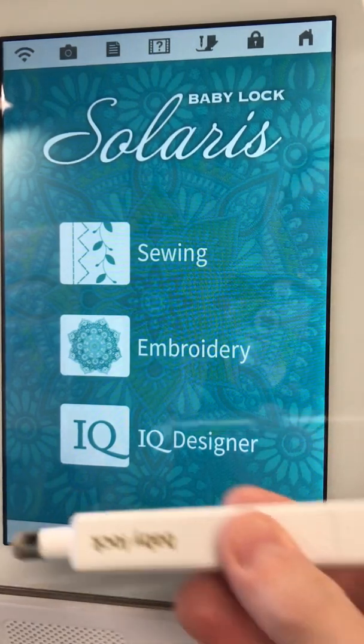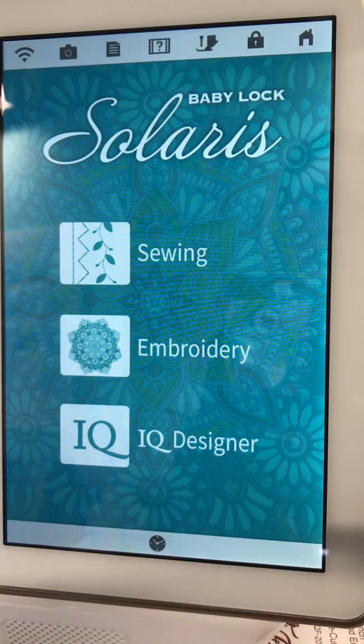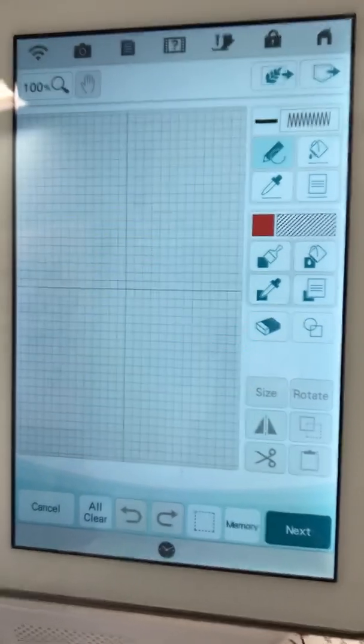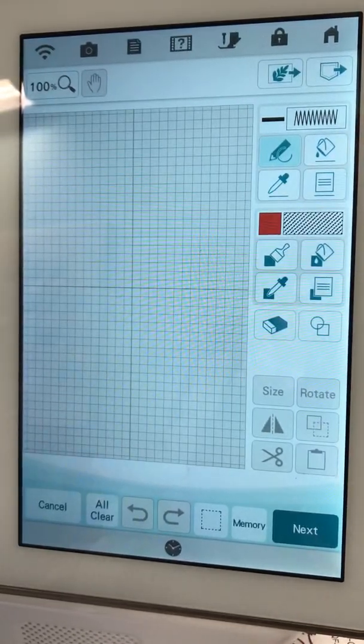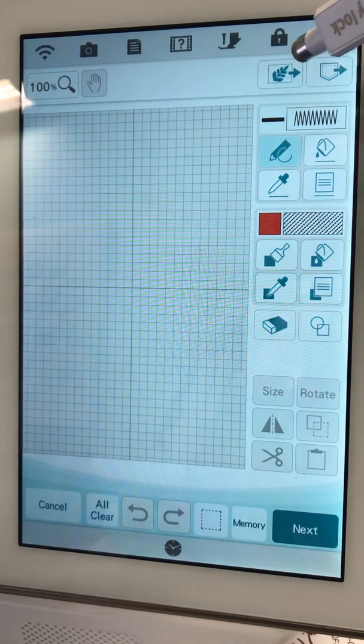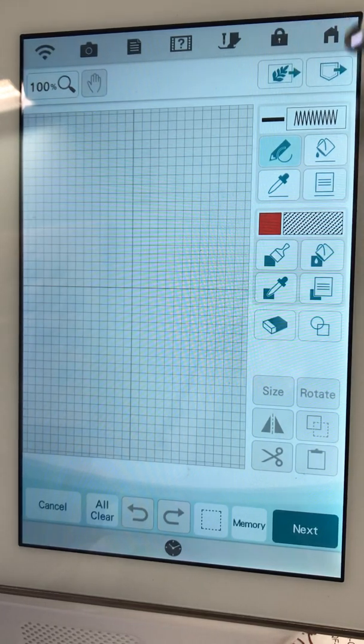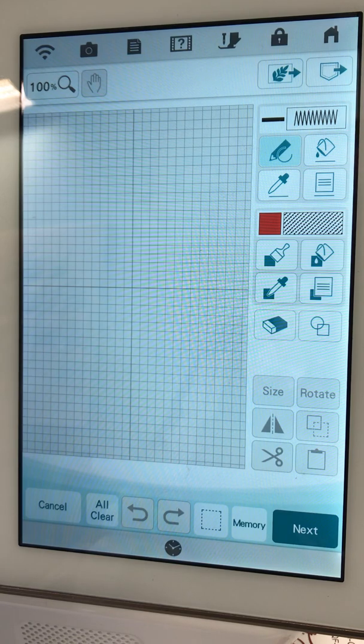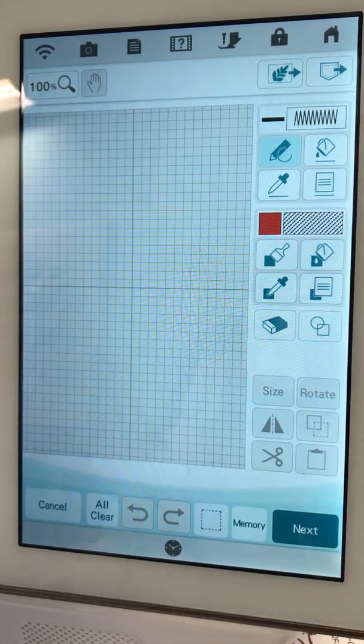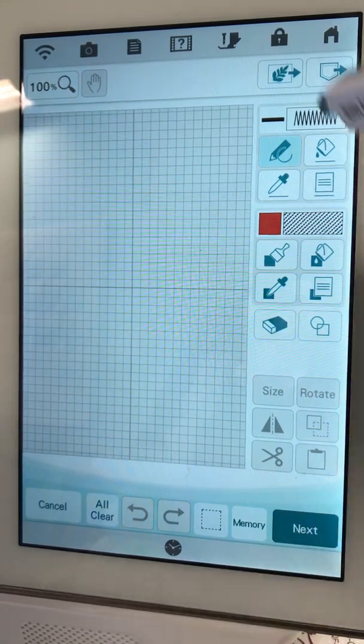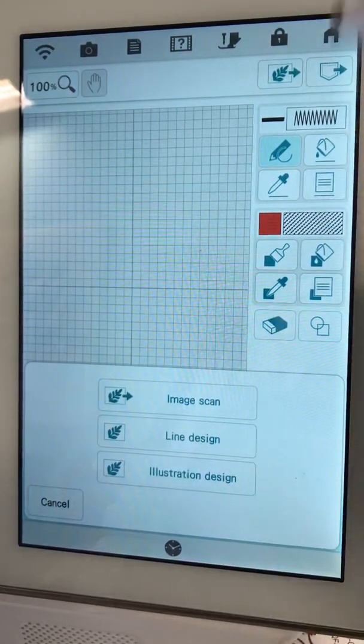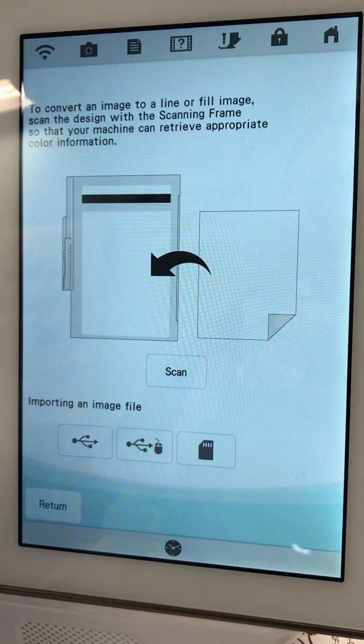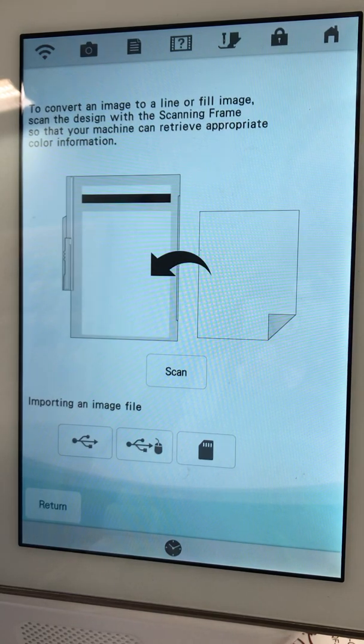Now that I have that loaded, let me show you how it works. I'm going to be using my special pen. The first thing I'm going to do—you can kind of see the different things that it can do. You can design in IQ Designer without doing any scanning, but I'm interested in doing the scanning. I want a line design for this particular pattern. I'm going to scan it.